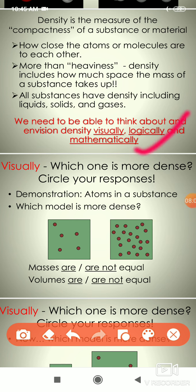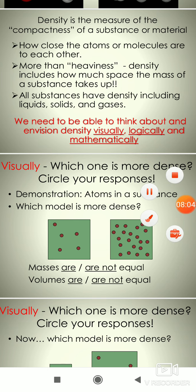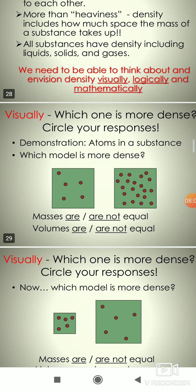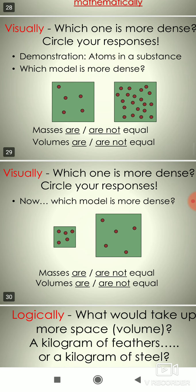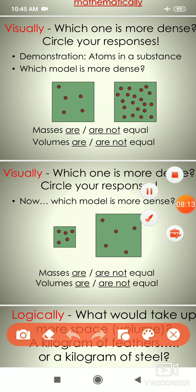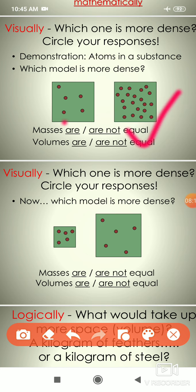We need to think about density visually, logically, and mathematically. Visually, in this figure we can see atoms in a substance — which model is more dense? You can visually see that one arrangement is more dense than the other.